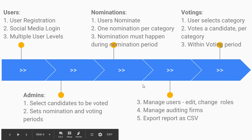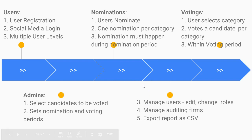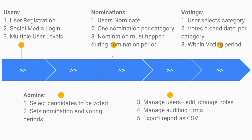We want one nomination per category. In a school department, for example, there are many categories people are vying for — president, provost, treasurer. We want to create all those categories. A user should be able to nominate only one person per category.